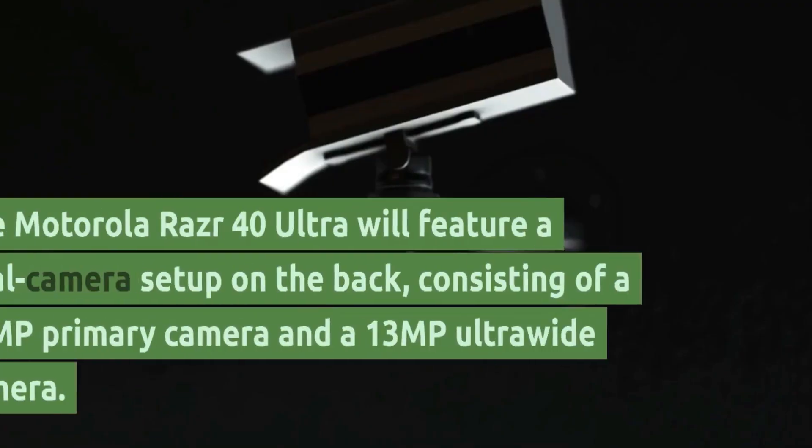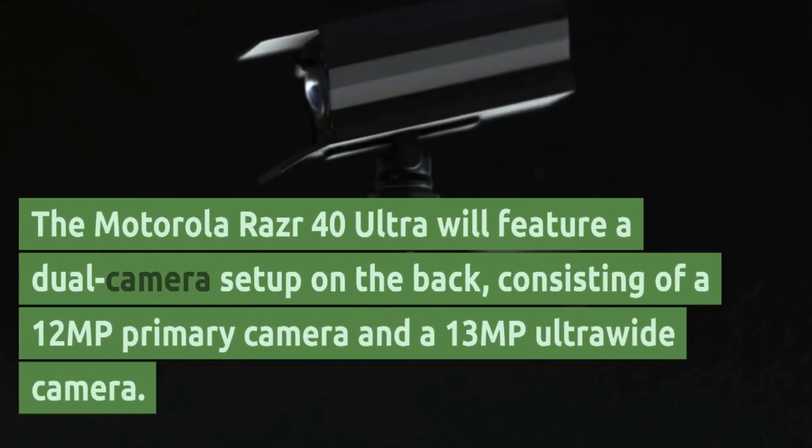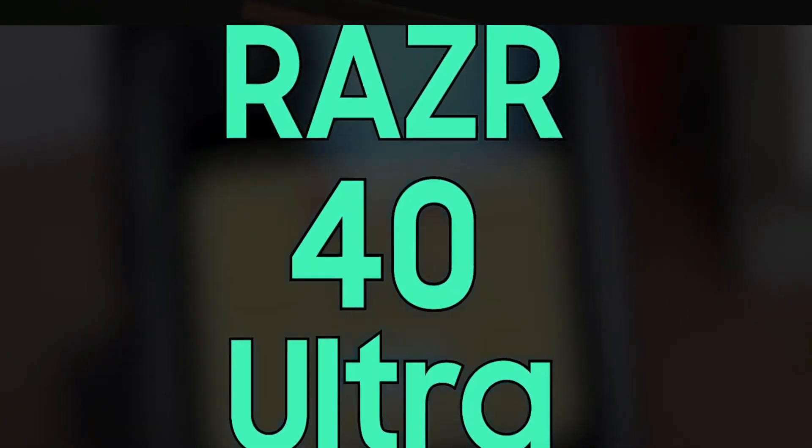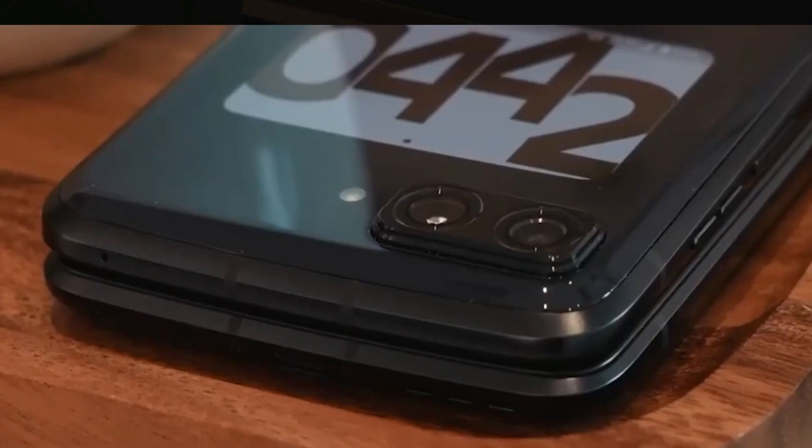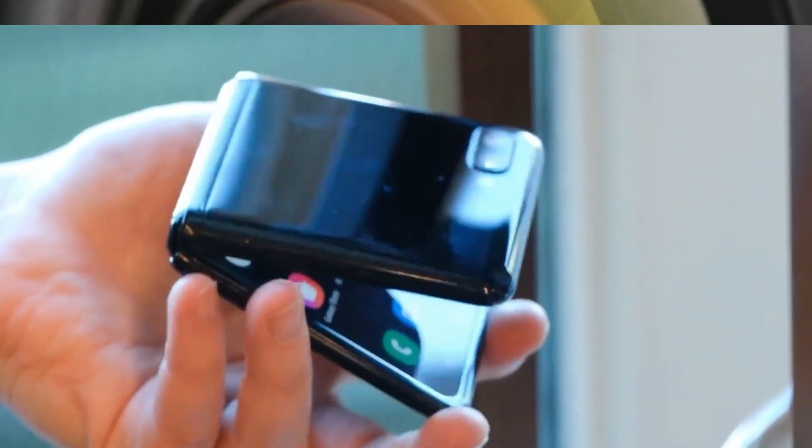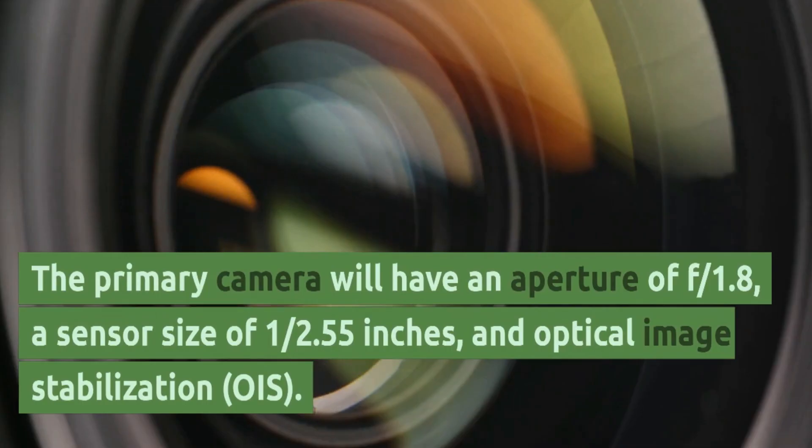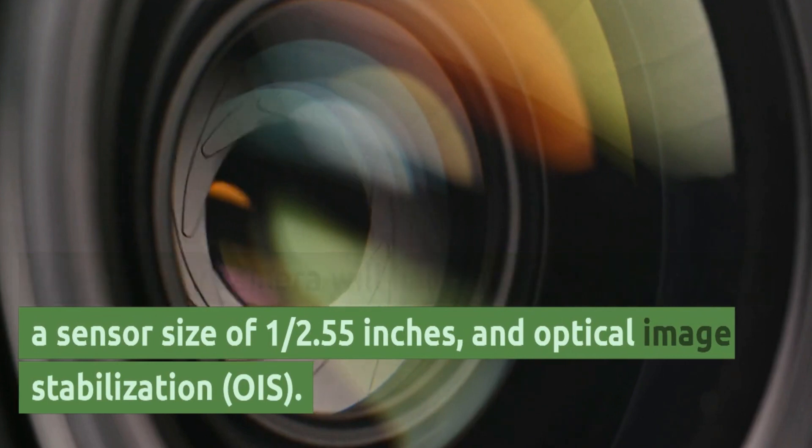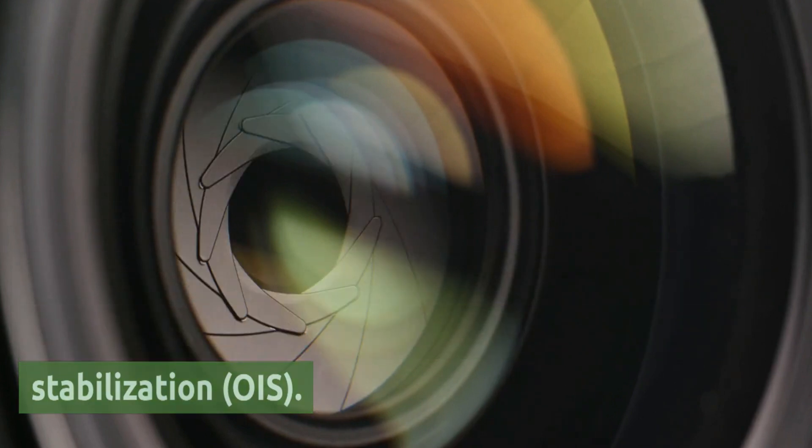Camera. The Motorola RAZR 40 Ultra will feature a dual camera setup on the back, consisting of a 12MP primary camera and a 13MP ultrawide camera. The primary camera will have an aperture of f/1.8, a sensor size of 1/5.55 inches, and optical image stabilization, OIS.